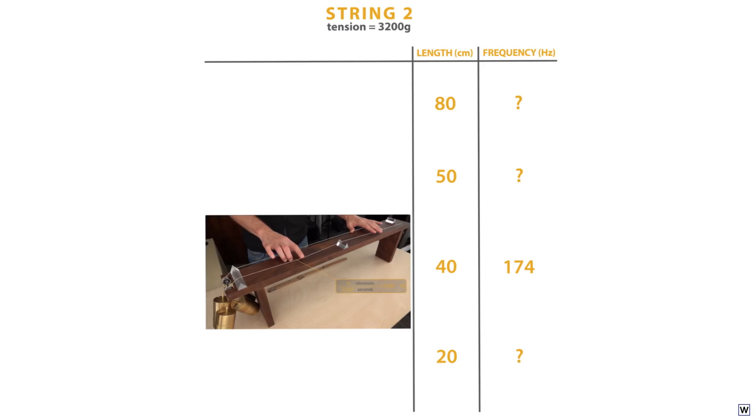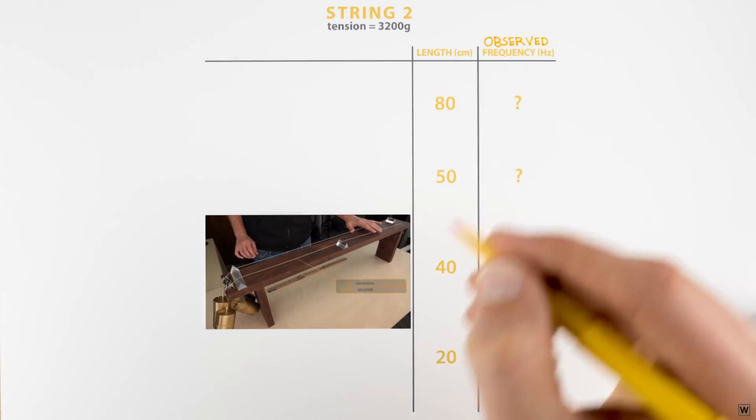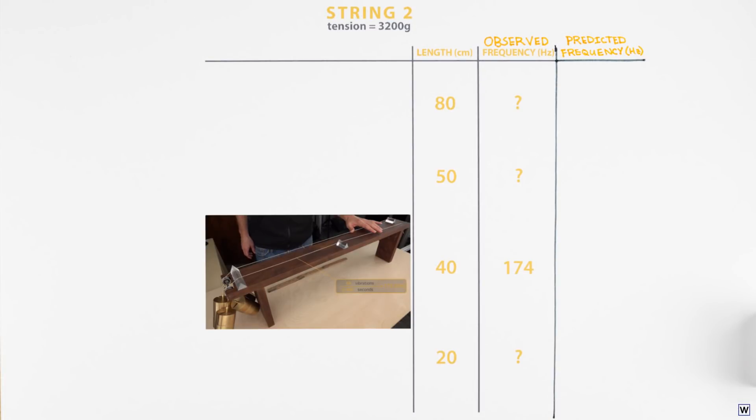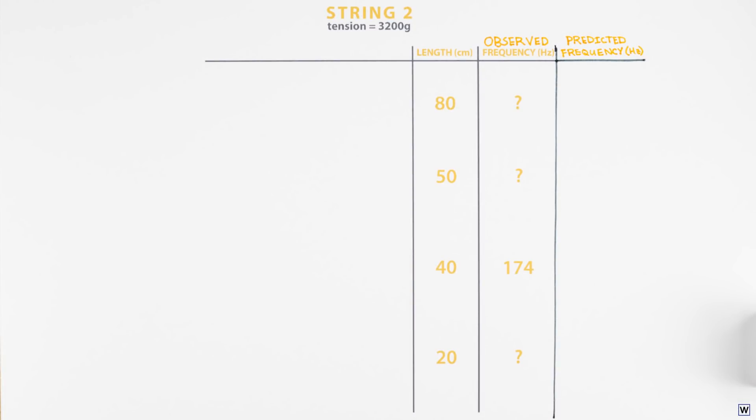Last time we set up a second string with a tension of 3200 grams, and observed a frequency of about 174 Hz at a length of 40 cm. Now, using our guess, let's predict the frequency of this string at a length of 80, 50, and 20 cm. Since going from 40 to 80 cm requires us to double our length, according to our educated guess, our frequency should be cut in half. So our original frequency of 174 Hz should become 87 Hz. This is our first prediction.